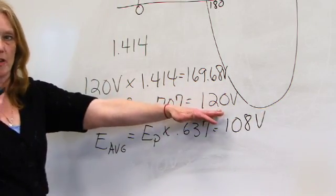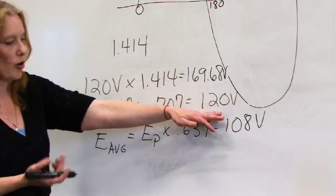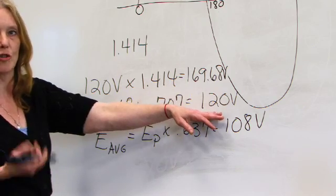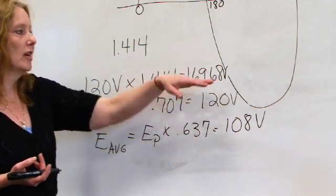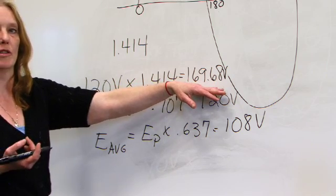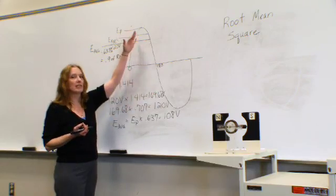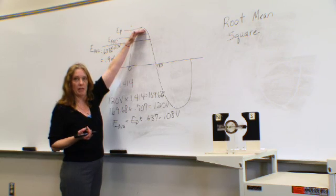So that 120 volts that you get out of your receptacle at home, or that you plug your light into, or you plug your computer in, is actually averaging 108 volts, but is actually peaking at almost 170 volts. So at every sine wave, we are hitting that peak value.